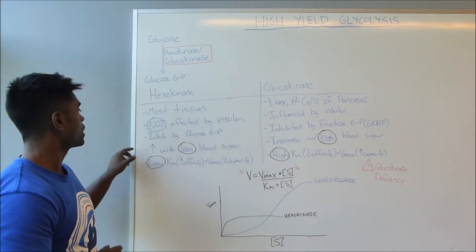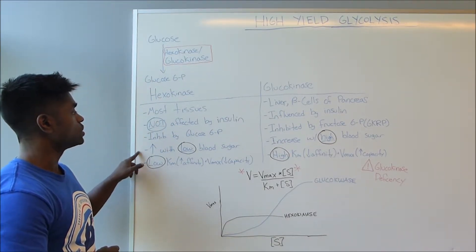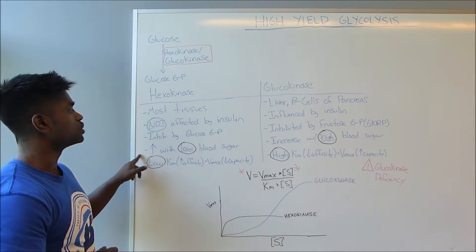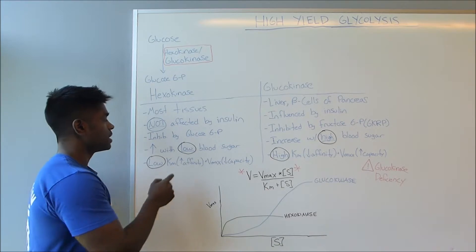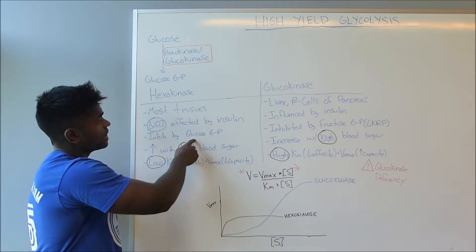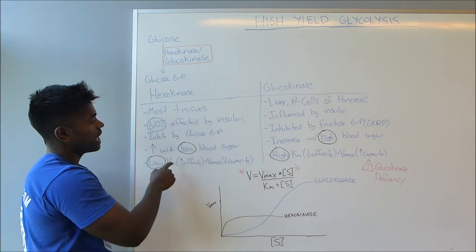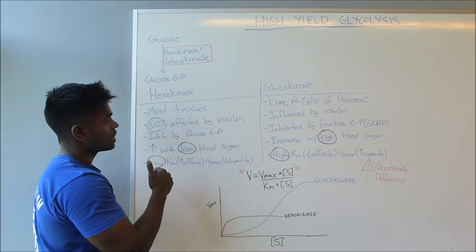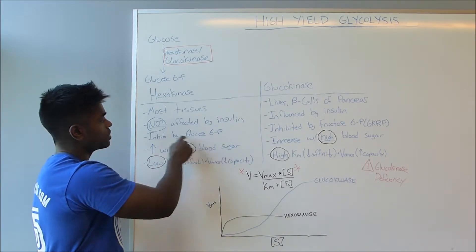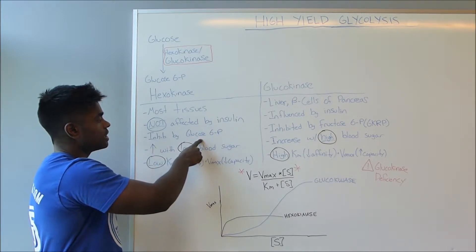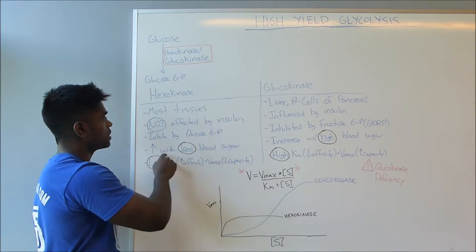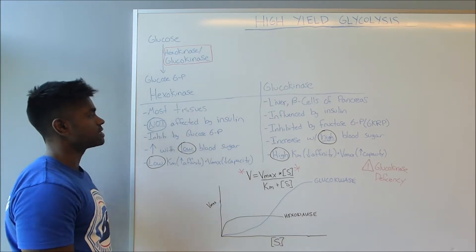Now the next thing we have is that hexokinase is going to increase with low blood sugar. And this makes sense because if you think about it, glucose 6-phosphate inhibits this product. So therefore, when you're going to have high amounts of sugar, you're going to have high amounts of this product which is going to cause an inhibition. Whereas low levels of this product, seen with low levels of blood sugar, is going to increase the activity of the hexokinase.